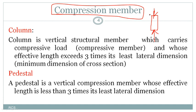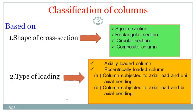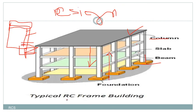If you observe any construction, which members are under compression? For this vertical member, load coming from the externally applied load and the slab and beam system, and from the ground we also have a reaction. That means this is a vertical member subjected to compressive force — I can call this a compression member.